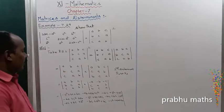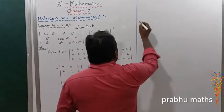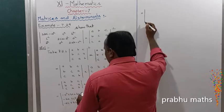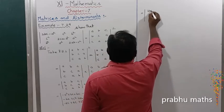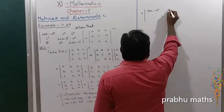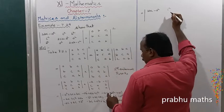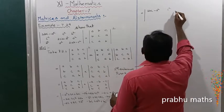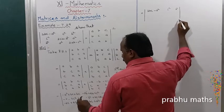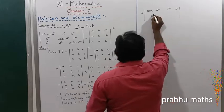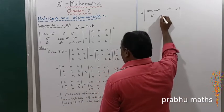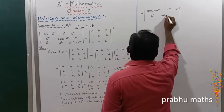We get the solution: the first term of the determinant equals minus a² plus 2bc, which is 2bc minus a². The remaining values after cancellation give c square and b square. Next: 2ac minus b square.